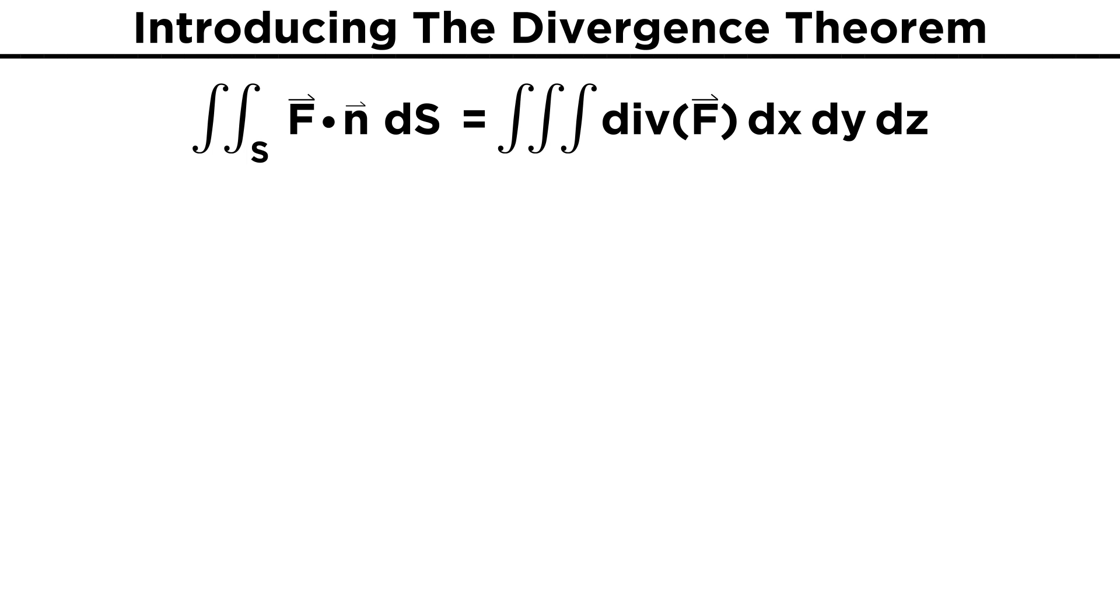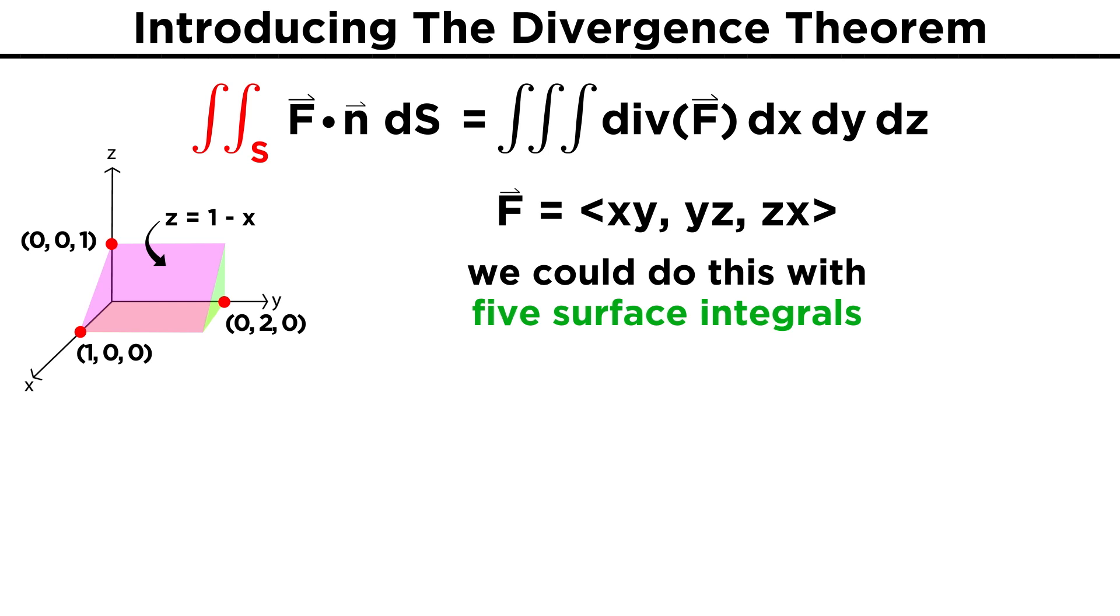Let's take a look at an example to see how to apply this theorem. Consider the surface of this triangular prism, which occupies x from zero to one, and y from zero to two. It has a flat base in the xy plane, and the top surface is given by the plane z equals one minus x. Now let's say there's a vector field in this space, which is given by F equals xy yz zx. If we wanted to calculate the surface integral of this field over the surface S without using the theorem, we would have to split each of the five flat surfaces of the prism into their own surface integrals and calculate each individually.